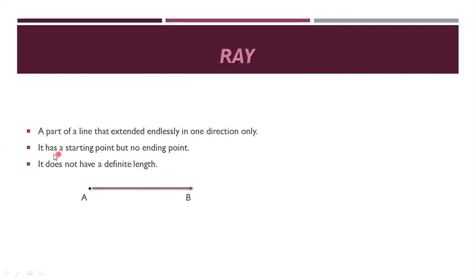Next is ray. A part of a line that extends endlessly in one direction only. It has a starting point but no ending point. It does not have a definite length. The best example is from the sun — the sun is a fixed point and rays go in different directions with no end. Light from a torch is also a good example of a ray.